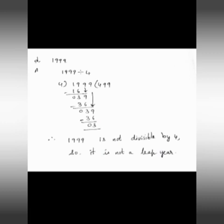Is it clear, children? After dividing, if we get remainder 0, then we can say this year is a leap year. But after dividing 1999 by 4, the remainder we got is 3 — it is not 0. So the year 1999 is not a leap year.